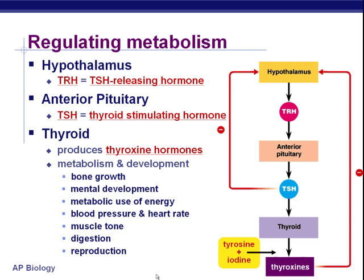The thyroid makes these hormones by secreting something called tyrosine, and it needs to find iodine in the body for these to become thyroxine hormones. If we have enough thyroxine doing what it needs to do, this will negatively feed back on the hypothalamus and cause it to stop making releasing hormones, shutting down the pituitary and TSH so we don't continue to make it. But if the hypothalamus does not detect thyroxine, it will continue to stimulate the thyroid until it gets detectable levels of thyroxine in the bloodstream.